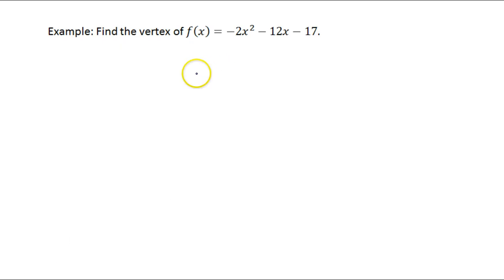Let's find the vertex of this function. h is going to be negative b over 2a, which will be positive 12, over twice negative 2, which is going to be negative 3.